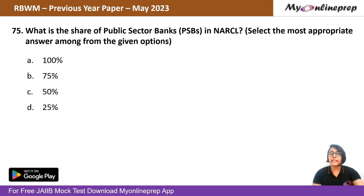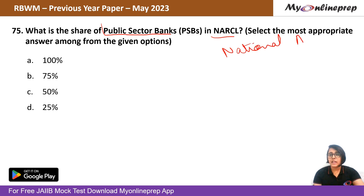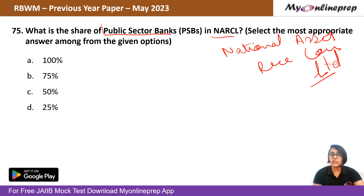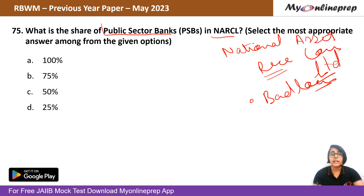Question 75 (last question today): What is the share of public sector banks in NARCL — the National Asset Reconstruction Company Limited? NARCL was established to address the issue of bad loans in the banking system by acquiring non-performing assets from banks. Options: 100%, 75%, 50%, or 25%. The share of public sector banks (PSBs) in NARCL is 75%. The right answer is option B.